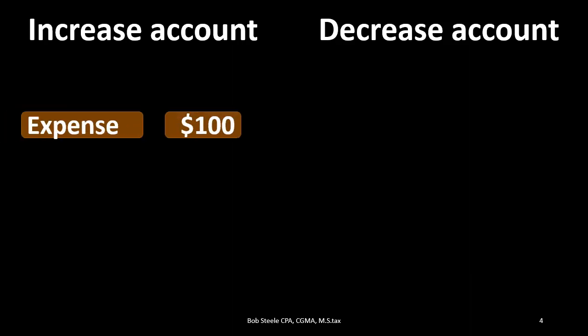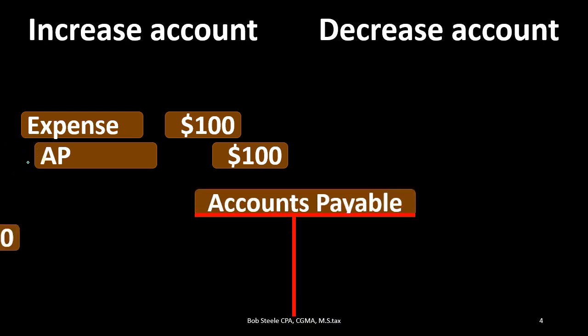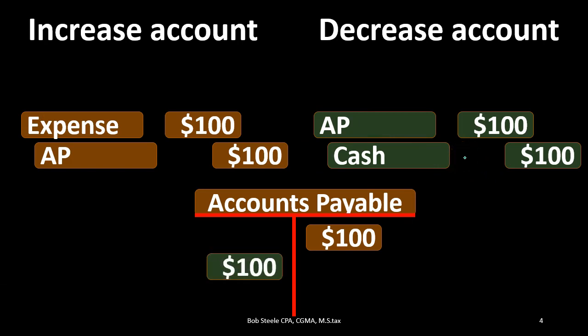Let's think through the two types of transactions for accounts payable. When does accounts payable go up? Consider an expense on account: we credit accounts payable for something we owe in the future, and we debit the expense. That expense is an income statement account — that's why we're dealing with it here. This gives us a clean two-step process, similar to accounts receivable.